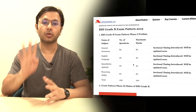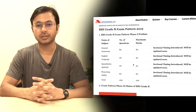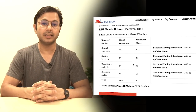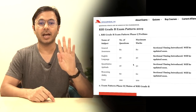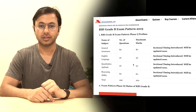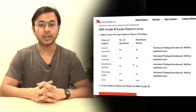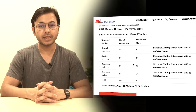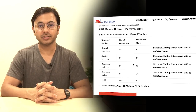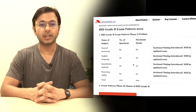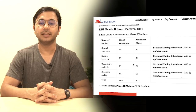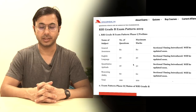RBI syllabus can be broadly defined into phase 1 as well as phase 2. Starting with phase 1, there are a total of 4 sections: Quantitative Aptitude, Reasoning, General Awareness, and English. The marks and number of questions allocated to these sections are 80 marks and 80 questions for General Awareness, 30 marks and 30 questions for English, 30 marks and 30 questions for Quant, and 60 marks and 60 questions for Reasoning.